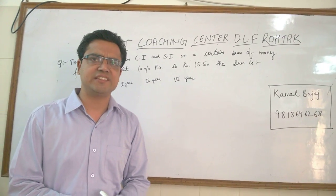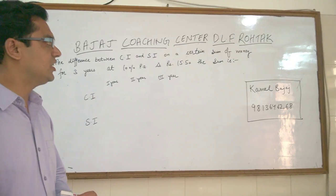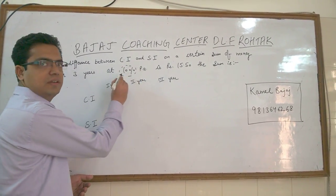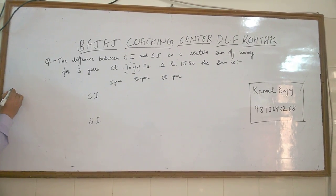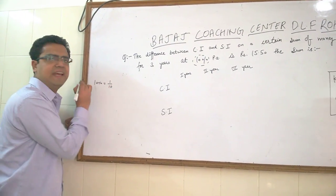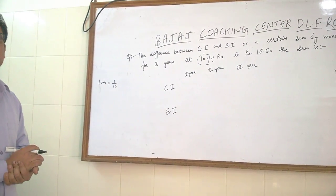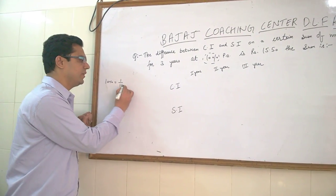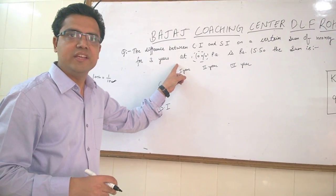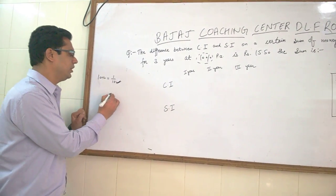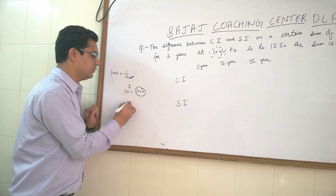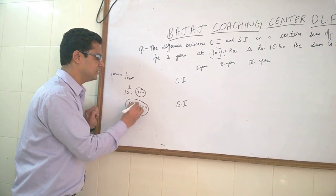We can do this question by many methods, by considering principle as X or anything, but the logical trick is: here rate is 10%. 10% rate means the fraction is 1 by 10. So what we will do, we will see the denominator — the denominator is 10, and time is 3 years — so we will do 10 cube, which is 1000. So we will take principle as 1000.